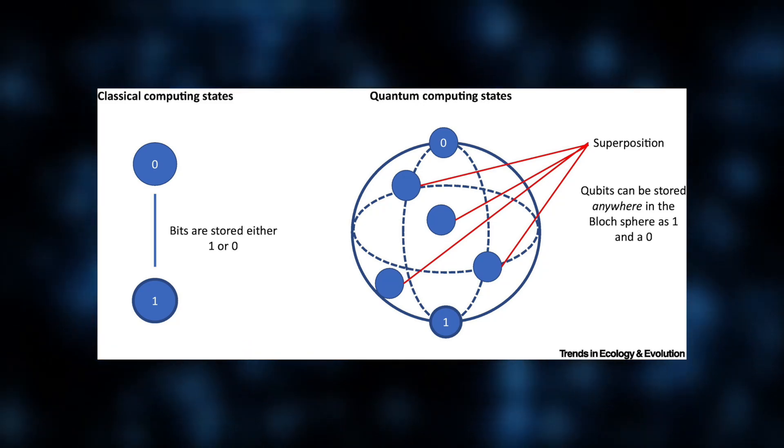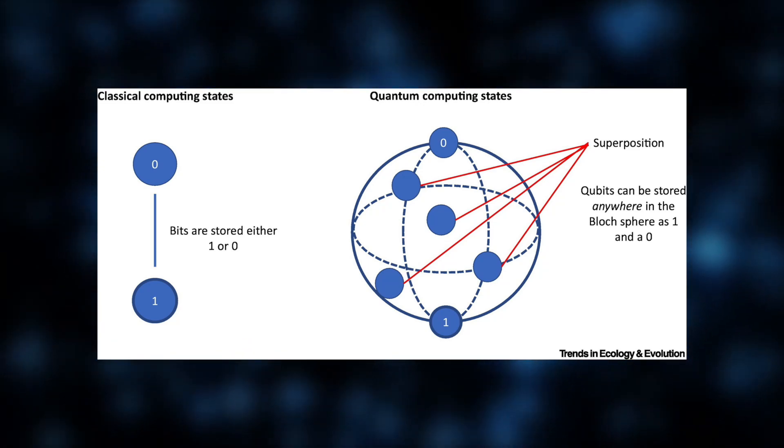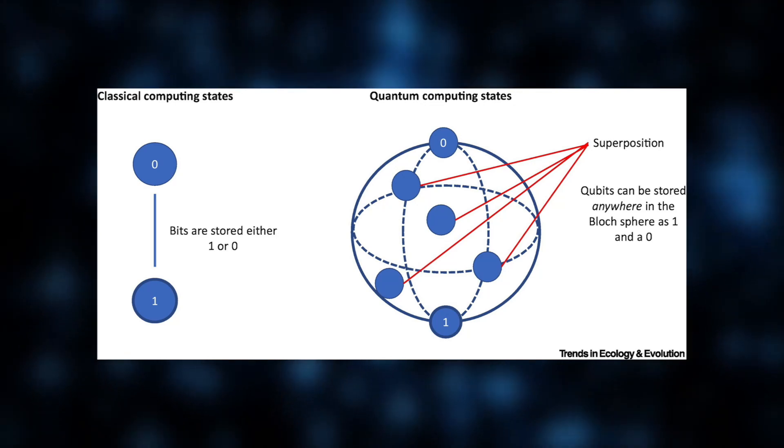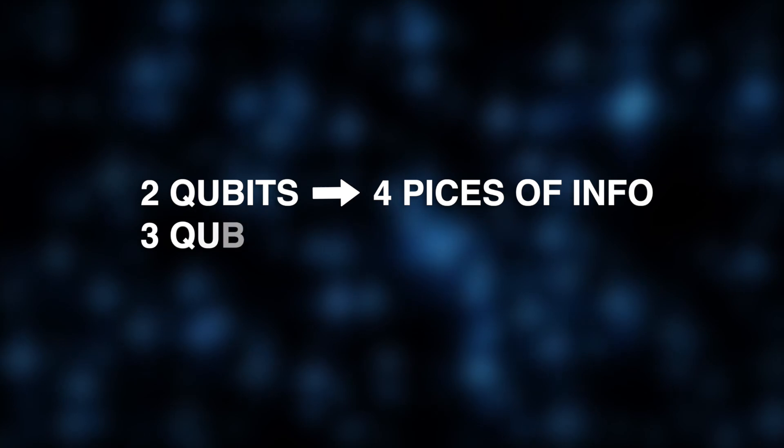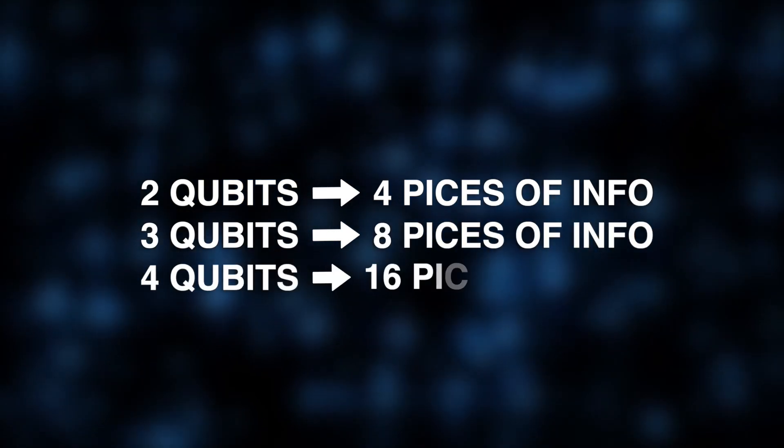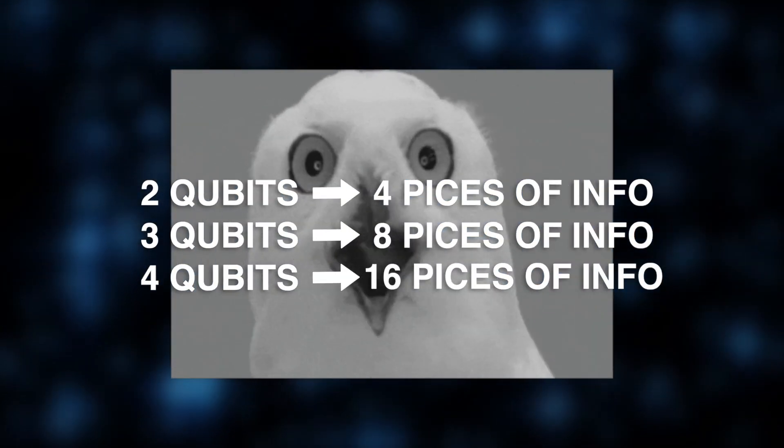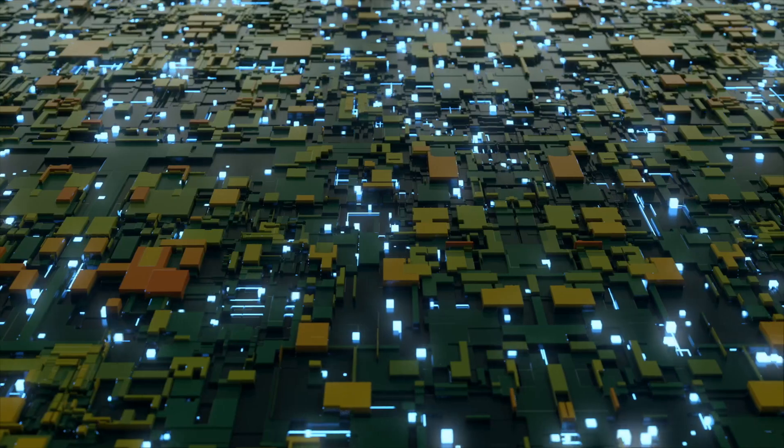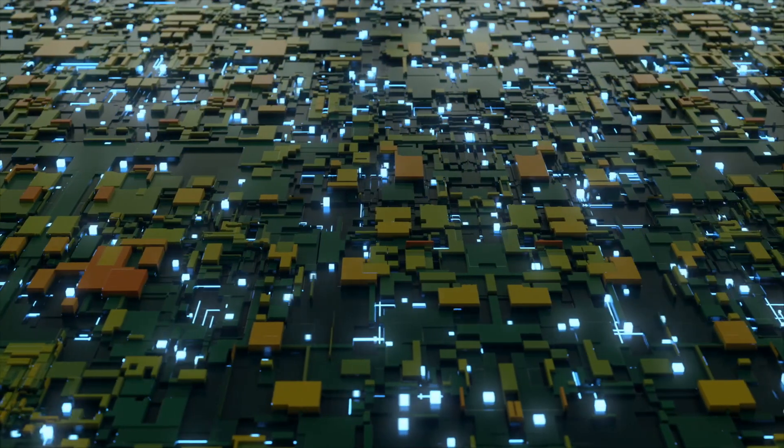This ability allows qubits to represent and compute multiple possibilities simultaneously. For example, two qubits can compute four pieces of information, three can compute eight, and four can compute 16. To understand quantum computing, it's essential to grasp four key principles of quantum mechanics.